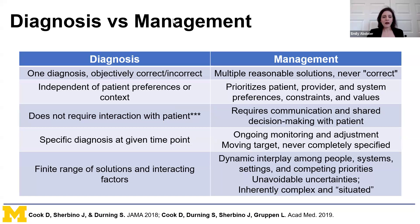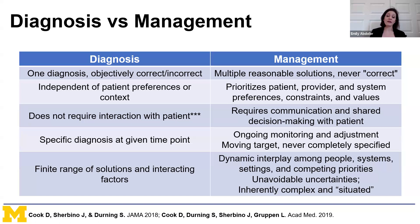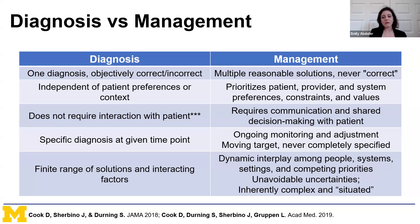Management reasoning is a lot different. Instead of one correct diagnosis, there are often multiple reasonable solutions—never a single correct option. I love giving this talk to a group of ID providers because I can say the only time that isn't true is in a pregnant person who has syphilis. Management must prioritize patient, provider, and system preferences, constraints, and values. Because of that, it requires communication and shared decision-making—you can't do it in your head in a vacuum.